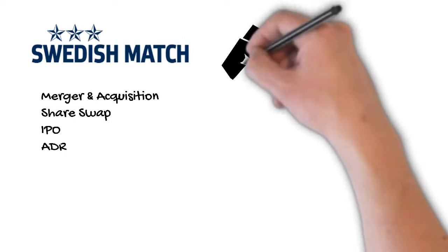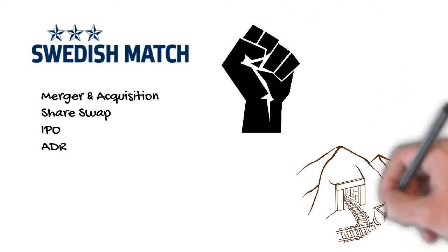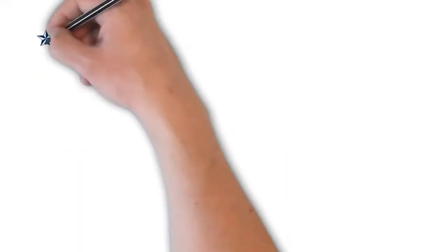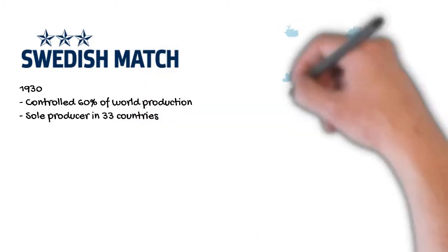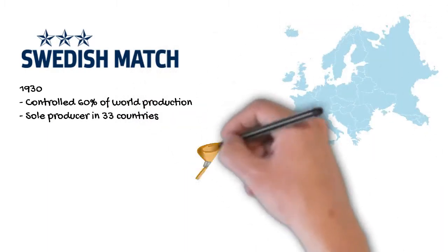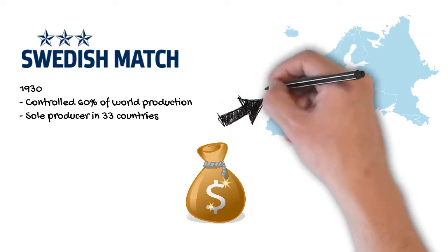He acquired many mines and companies that supply raw materials. By 1930, Swedish Match controlled 60% of the world's production of matches and was the sole producer in 33 countries. One of the reasons why Ivar Kreuger could create this monopoly was through the loans he provided to governments.